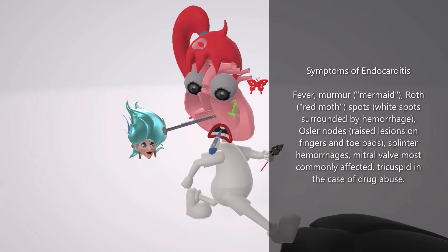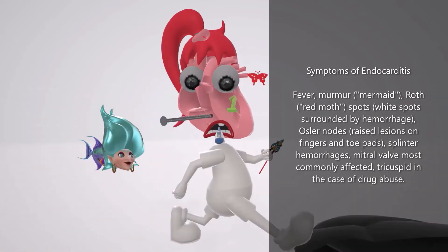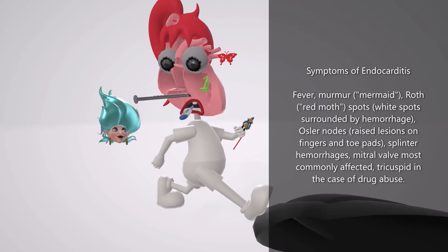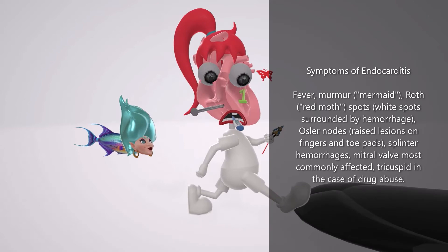On her hand she has some sort of wizard — let's call it the Wizard of Oz, or just 'Oz' for Osler nodes. Osler nodes is another symptom of endocarditis: these are ouchy raised lesions on the finger or toe pads, due to immune complex deposition. Then by her nail bed she has this bloody splinter sticking out — splinter hemorrhages on the nail bed are another symptom of endocarditis.